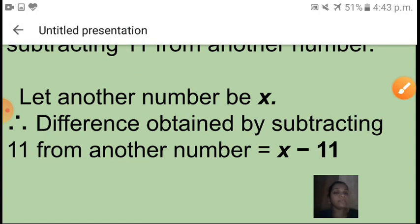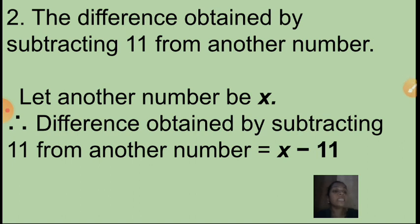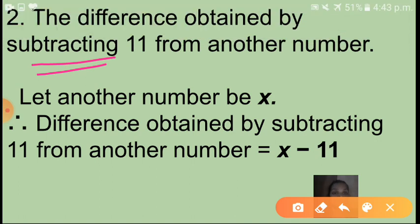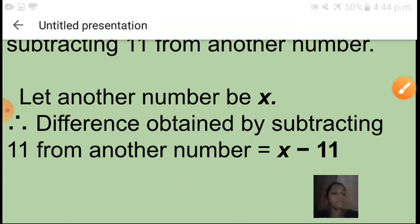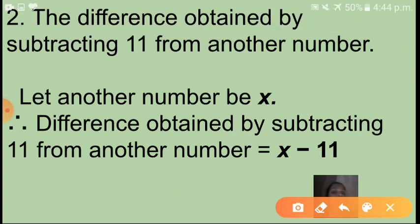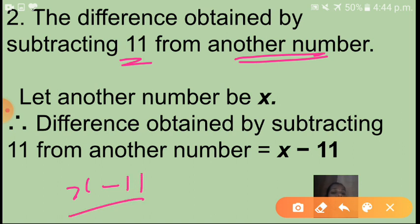Next one: the difference obtained by subtracting 11 from another number. Here, subtracting means minus. Let another number be x. Therefore, the difference obtained by subtracting 11 from another number is x minus 11. Why minus? Because subtracting. So x minus 11 is the answer. If I give you some statement, can you write an expression like this using a variable?